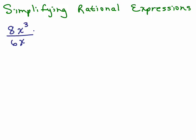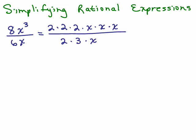So here's an example, 8x cubed over 6x, we've done problems like this before. One way of doing it is completely factoring the numerator. And the single factors in the bottom we just have 2 times 3 times x and then any common factor you can cancel.